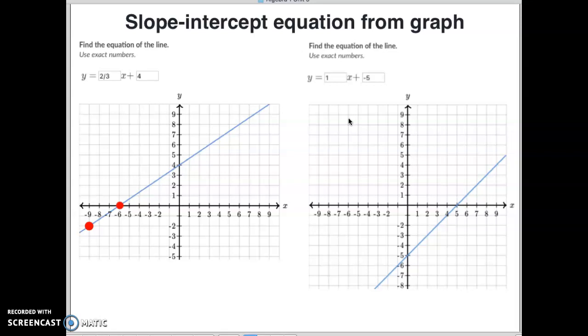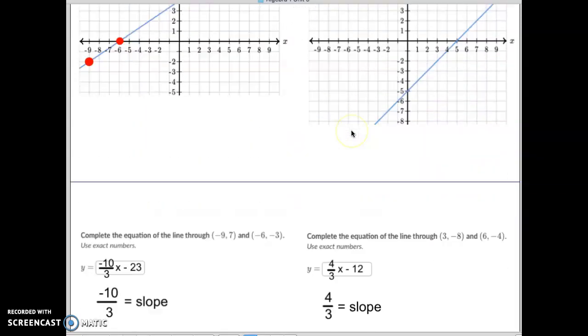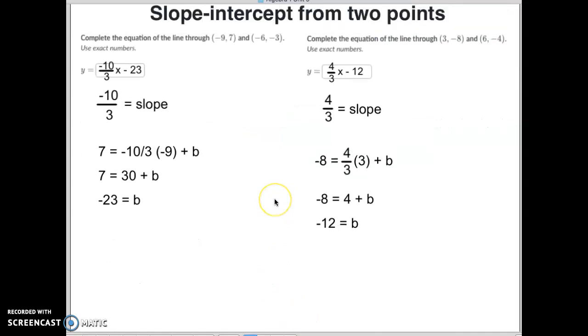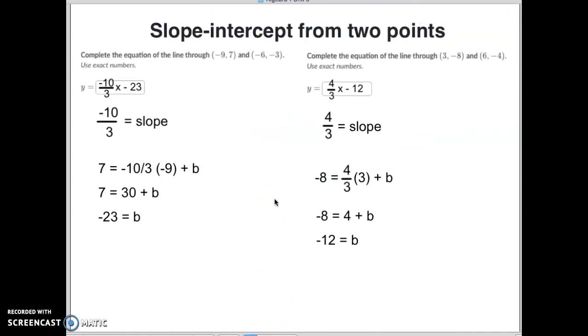That's all there is to it for slope-intercept equation from a graph. Now the one we've been working on is called slope-intercept from two points. I already kind of have it laid out here because we've been doing this so often. We're taking a look at this question right here and we've got to find the equation of the graph.